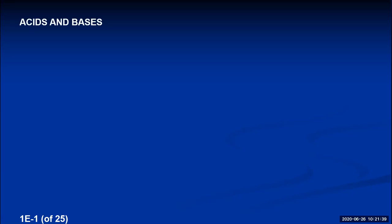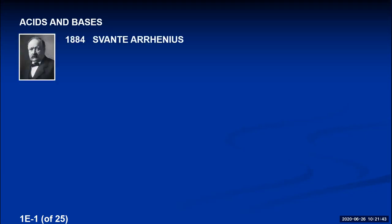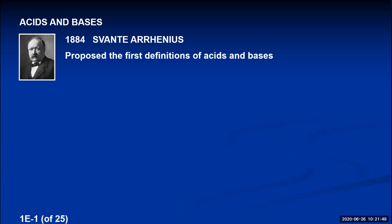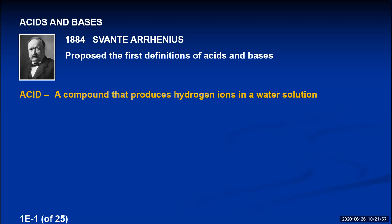This is lecture 1e and today's topic is going to be acids and bases. In 1884, the Swedish chemist Svante Arrhenius proposed the first definitions ever for acids and bases. People knew that substances had acidic and basic properties but they didn't know why. Arrhenius proposed that an acid is any compound that, if you dissolve it in water, it produces hydrogen ions in that water solution.